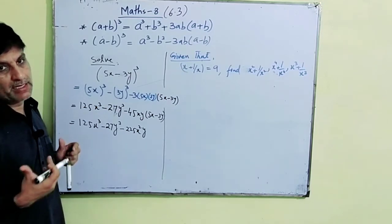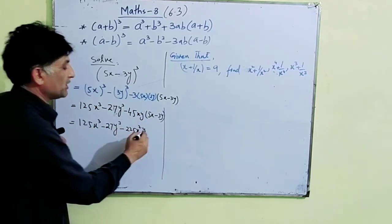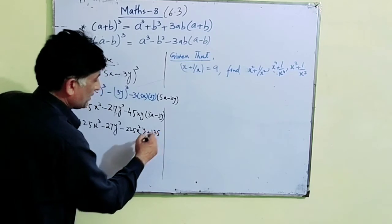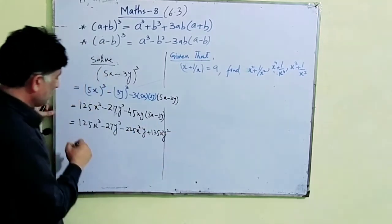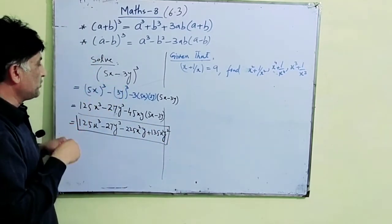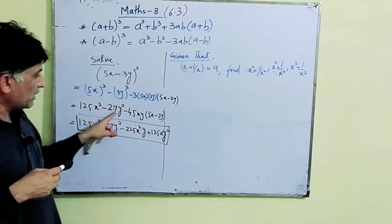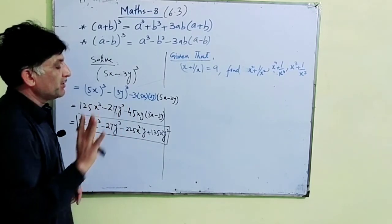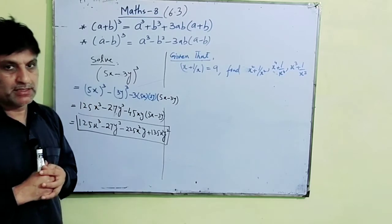When the bracket outside has minus, signs inside change when opened. So we get -45xy × (5x - 3y) as the 3ab(a-b) part. The final result: 125x³ - 27y³ - 135x²y + ... I hope this question is now well understood. If there were plus instead of minus, all minus signs in the answer would become plus.